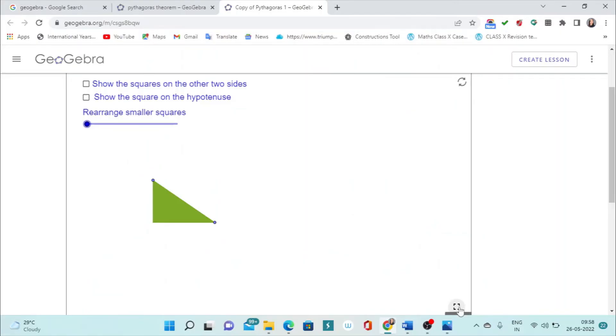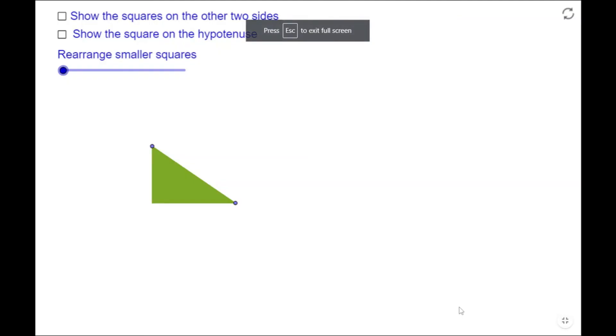So, let us quickly see an illustration that how you will do this activity. So, in this green color, this is your right angle triangle. You are supposed to cut square of this side, this side and this side. Right?